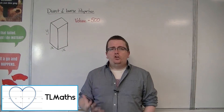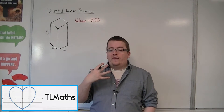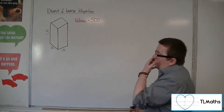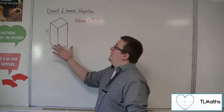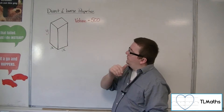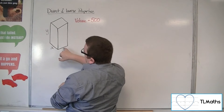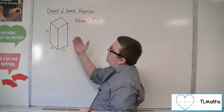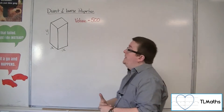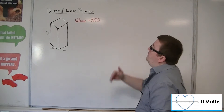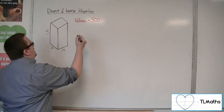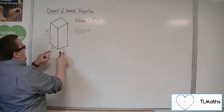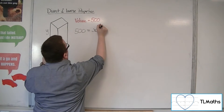Let's say I have a cuboid with a square base of fixed volume 500. I can draw a diagram that looks something like this. It's got this square base, so this side and this side must be the same length — x and x. I've represented the height as the variable y. If the volume is 500, then 500 must be equal to x times x times y, so x squared y.